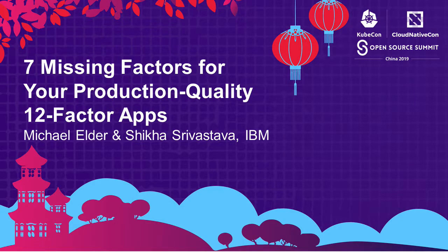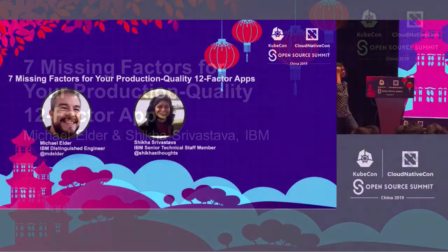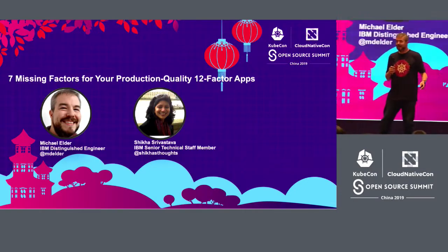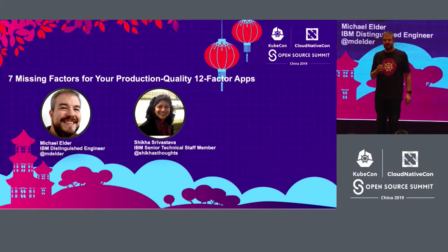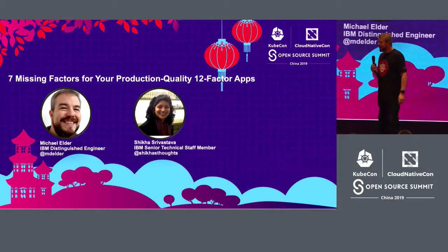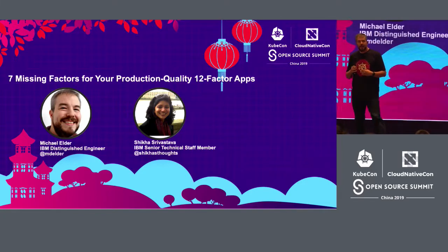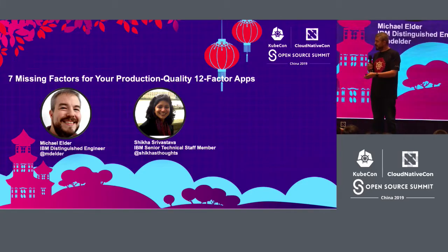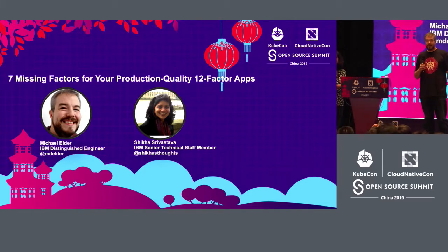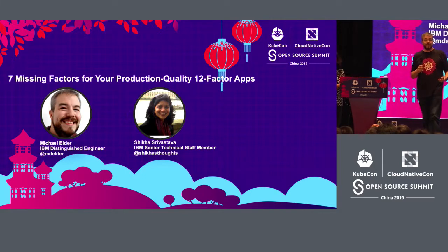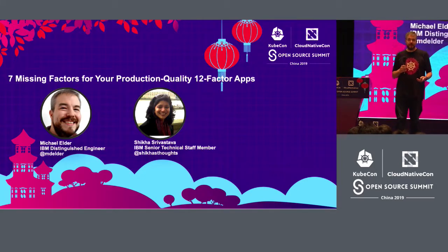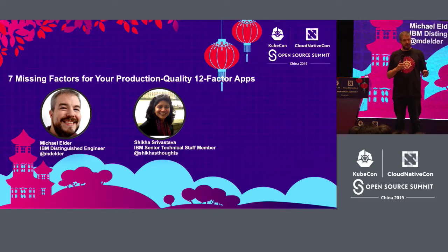Good morning. Welcome, everyone. Thanks for coming out. I know we overlap with a keynote, so I appreciate you making time to come out and see our talk. My name is Michael Elder, and I'm here today with Shika. We're going to talk to you about the seven missing factors for production applications, thinking about what is it beyond 12-factor applications that you need in order to run Kubernetes in production.